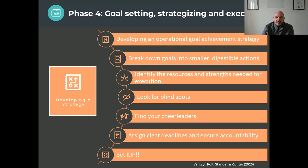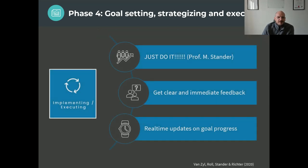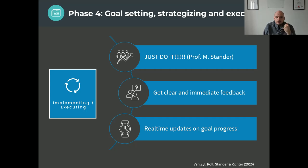Assign clear deadlines to each goal and ensure there is accountability to each one. We do all of this by formulating an individual development plan or personal development plan — capturing all the strategies, processes, and goals in a plan so that a person knows when, what they need to achieve, what behaviors they need to action, who they need to help them get there, and when we can evaluate if it has been achieved. And then finally, implementation — just do it. Taking the plan and start actioning it, giving the client very clear and immediate feedback, and also asking them to get feedback from peers and their manager.